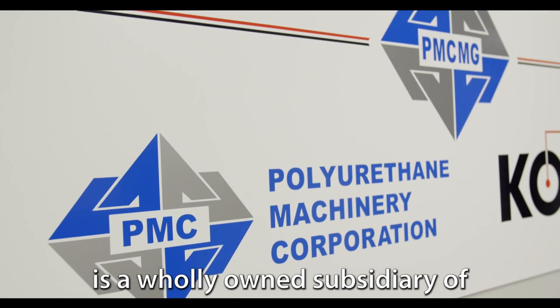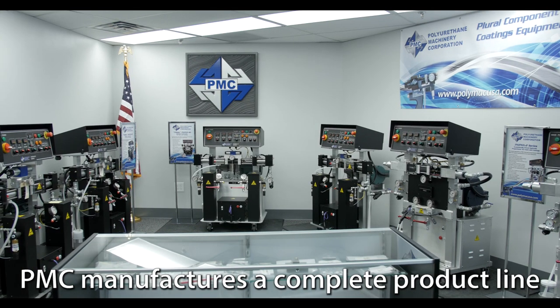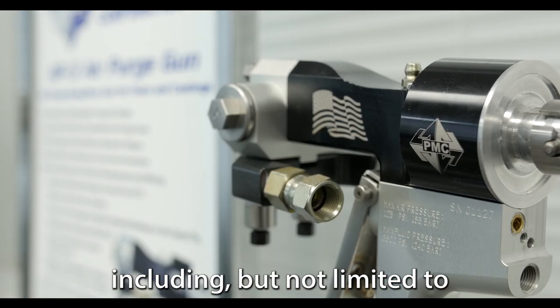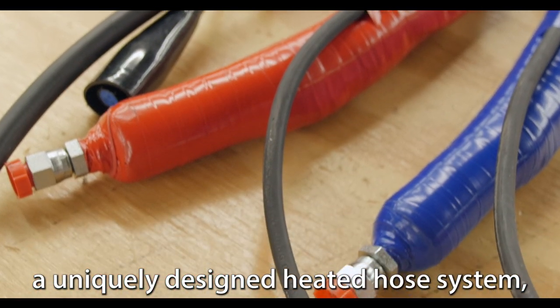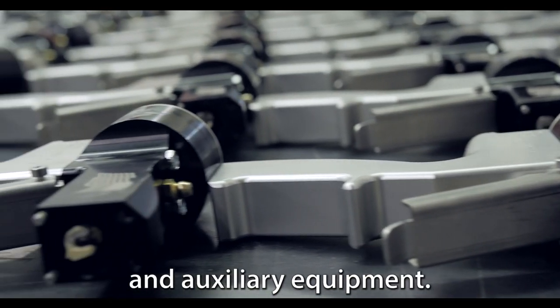Polyurethane Machinery Corporation is a wholly owned subsidiary of PMC Global Inc. PMC manufactures a complete product line for urethane spray systems including proportioning units, a uniquely designed heated hose system, transfer pumps, spray guns, and auxiliary equipment.